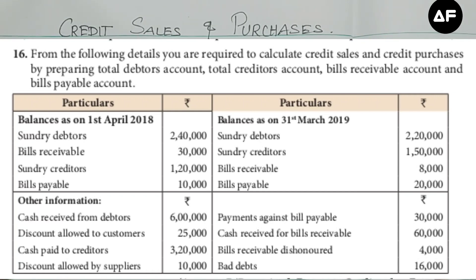The balances have been given in a split-up way — the opening balances of all four items (debtors, creditors, bills receivable, and bills payable) and the closing balances of all four items. Other information related to all four accounts is also provided. We have to disintegrate these items, determine which item goes into which account, and start the accounts accordingly.